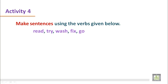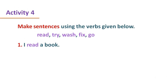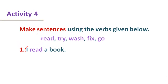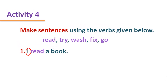Here you go. Sentence number one: I read a book. Here we see the subject 'I' is first person singular, and this subject doesn't require any verb with S, ES, or IES in the present form. It is simply the verb with the base form: read.